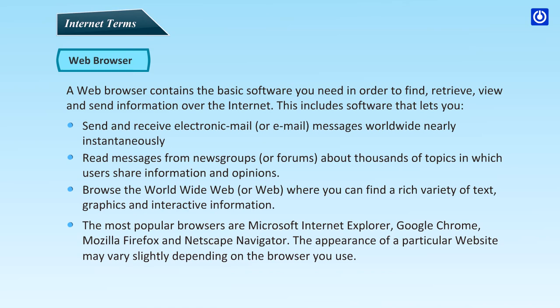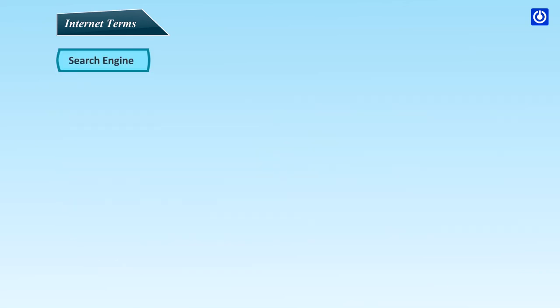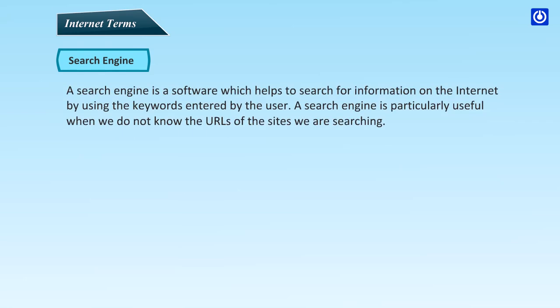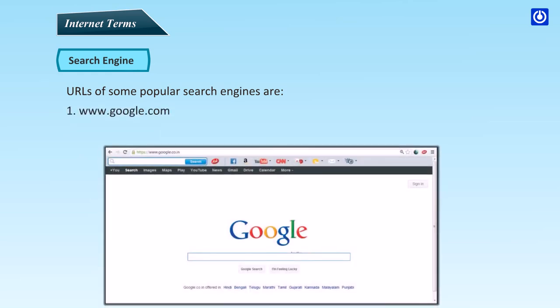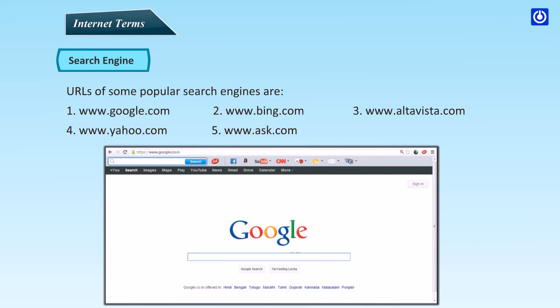The appearance of a particular website may vary slightly depending on the browser you use. A search engine is software which helps to search for information on the Internet by using keywords entered by the user. A search engine is particularly useful when we do not know the URLs of the sites we are searching. URLs of some popular search engines are www.google.com, www.bing.com, www.altavista.com, www.yahoo.com, and www.askto.com.